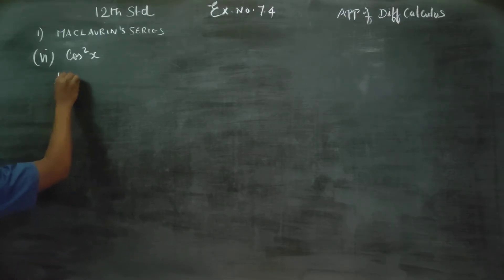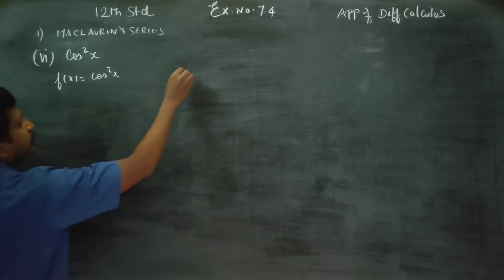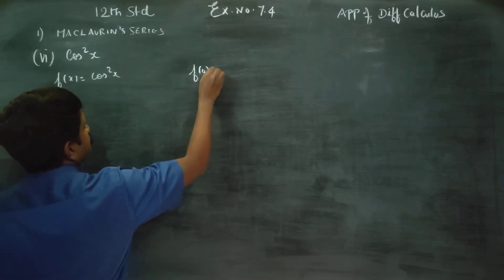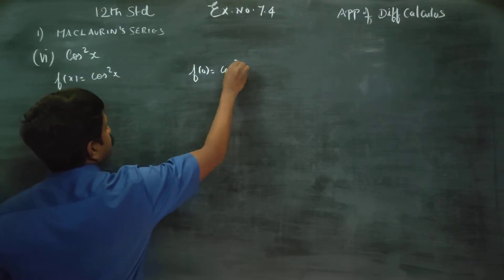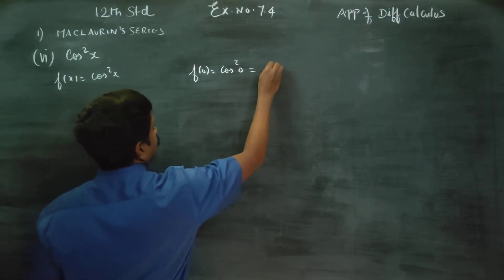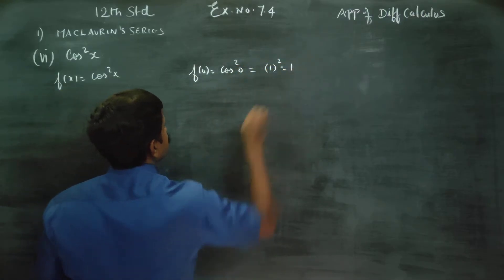First of all, name this as f of x. f of x is equal to cos square x. f of 0 is equal to cos square 0. cos 0 is 1, therefore you will be getting 1 square, answer is 1.